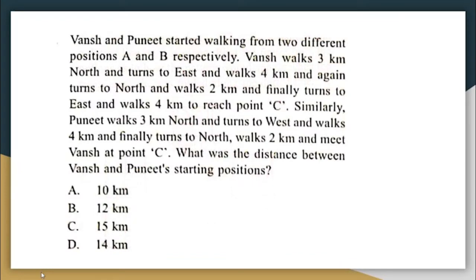Vansh and Puneet started walking from two different positions A and B respectively. Vansh walks 3 km north, turns east and walks 4 km, again turns north and walks 2 km and 4 km, and finally turns east and walks 4 km to reach point C. Similarly, Puneet walks 3 km north, turns west and walks 4 km, finally turns north, walks 2 km and meets Vansh at point C. What is the distance between Vansh and Puneet's starting positions?